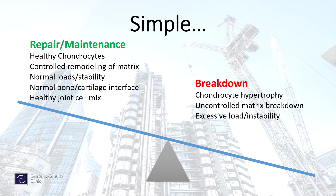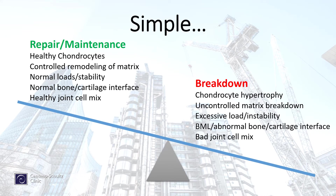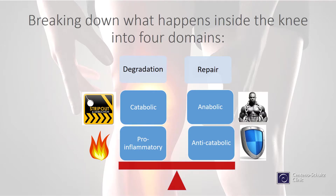We can also see too much load or instability in the joint, an abnormal bone-cartilage interface, and a bad joint cell mix. Breaking this down further into four domains: we have degradation and repair — meaning breakdown and repair — and on the breakdown side,